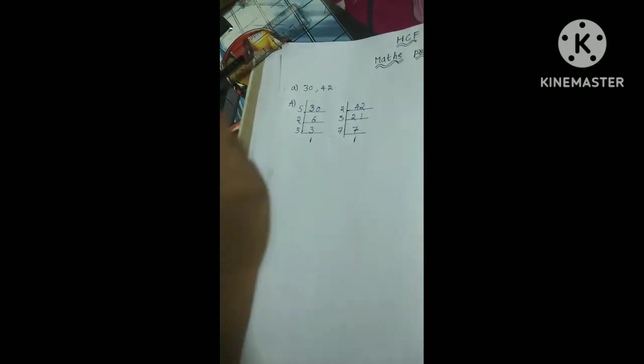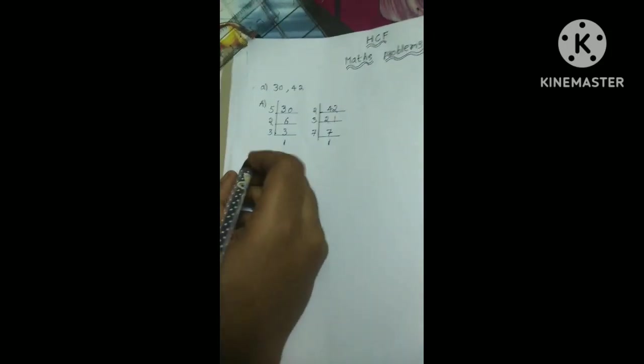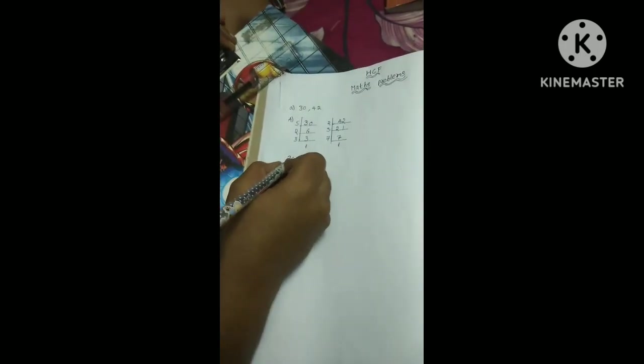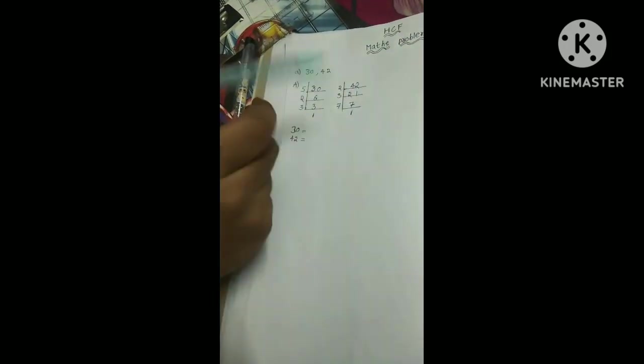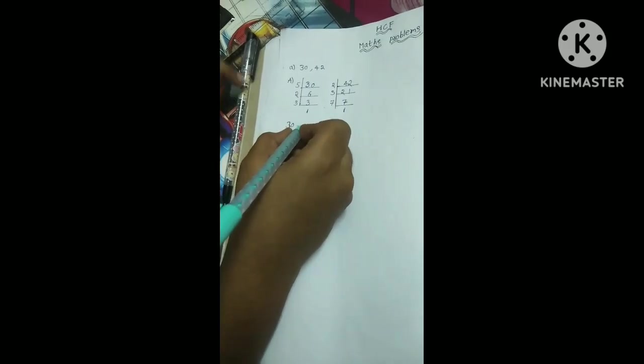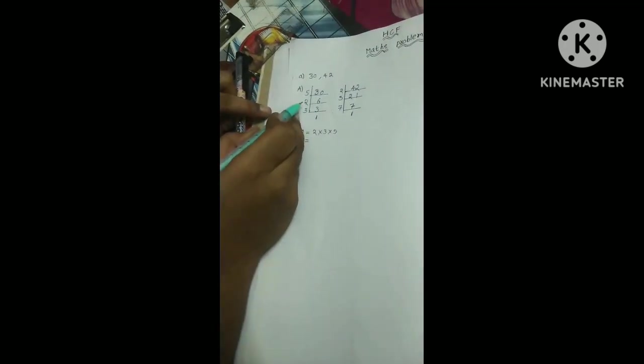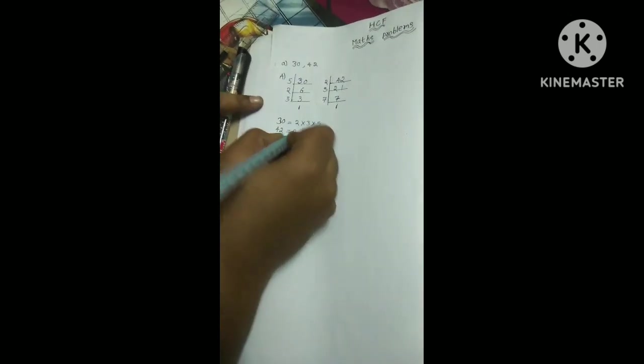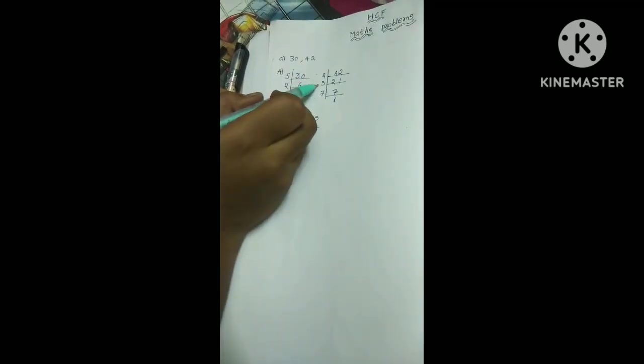Over now, friends. Both the sums are completed. No, still is there. We should find the answer. Now, this 30 and 42, we should write here. 30 is equals to, 42 is equals to. Now here came out these answers. We should do ascending order, small to big. 2 into 3 into 5. Now next this sum, 2 into 3 into 7.